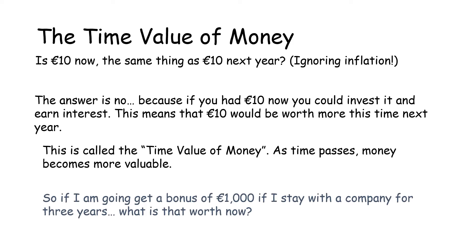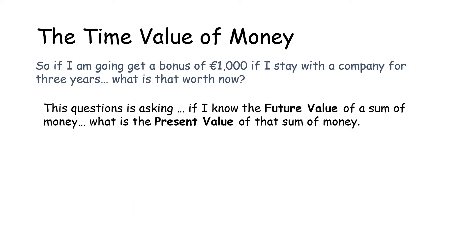So if I'm going to get a thousand euro bonus if I stay with a company for three years, what is that worth now? I'm trying to understand: if I have a future value — a value of something in the future — how much is that worth to me now? A thousand now is worth a lot more than a thousand in three years. So it's important to make the connection between the value of money in the future and the value of money now. That's known as future value and present value.